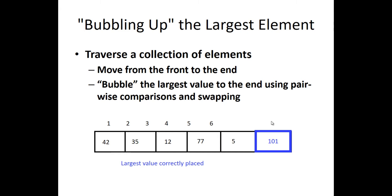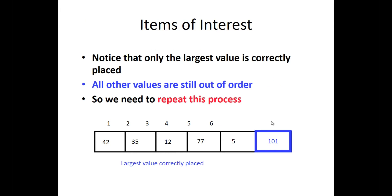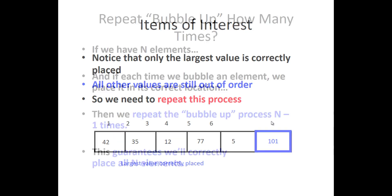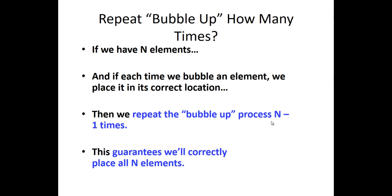This completes one full iteration. At the end of this iteration, one element is confirmed in its correct position — 101 is the largest element and is now fixed. This iteration is repeated until we get a fully sorted list. After each pass, only the largest value is correctly placed; all other values may still be out of order, so we repeat the process.